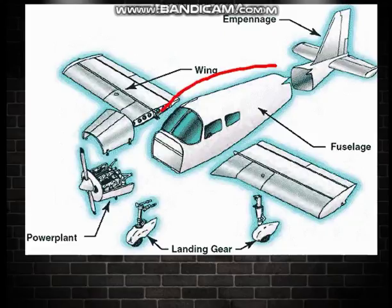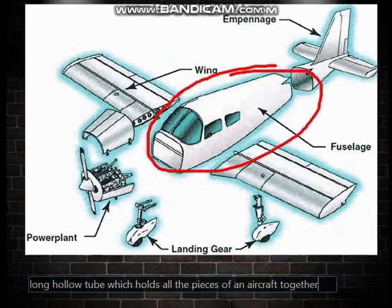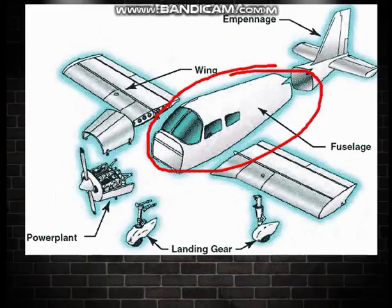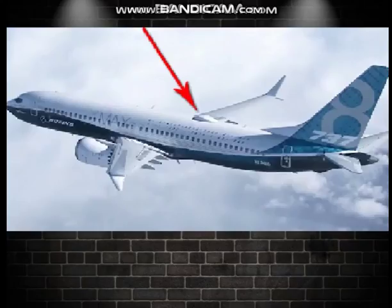The fuselage is the body of an aircraft, which is a long hollow tube that holds all the pieces of an aircraft together. Let's look at some real life examples of the fuselage — here we have the Boeing 747's fuselage.